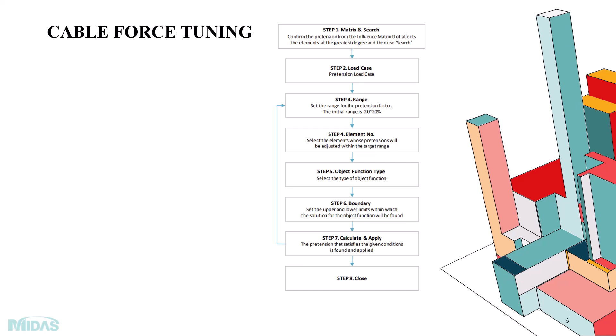These are the steps to follow: Step 1 — the matrix and search method, where the influence matrix for each element is checked and which cable force is affecting it the most. Step 2 — load cases and pretension loads. Step 3 — set the range. Step 4 — provide the element number and select elements whose pretension will be adjusted within the targeted range. Step 5 — objective function type: linear, absolute max, or square. Step 6 — boundary setting, the upper and lower limits within which the solution will be found. Step 7 — calculate and apply. Let's see how it is done in Midas Civil step by step.